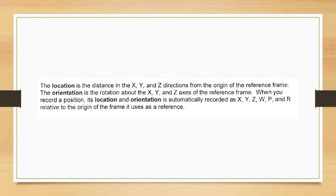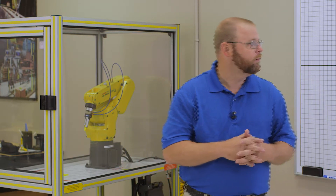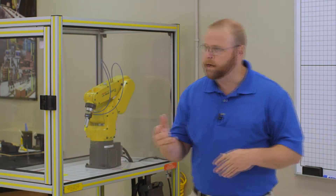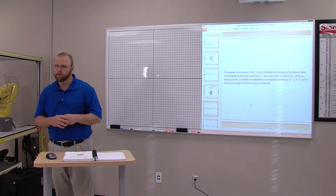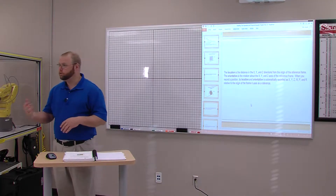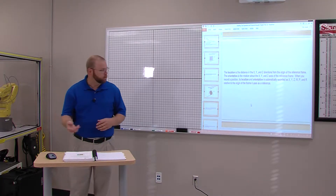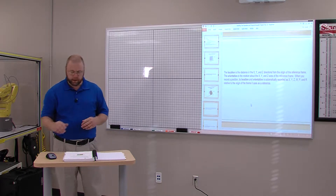When we get ready to record a position, its location and orientation is automatically recorded as X, Y, and Z, W, P, and R relative to the origin of the frame it was defined in. We've got several frames that we can use. X, Y, and Z is your location. W, P, R — which is yaw, pitch, and roll — is orientation about those three axes, X, Y, and Z.